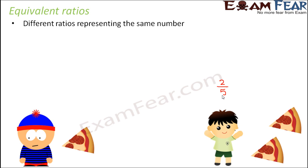So one slice of pizza out of five slices. So let's call him A and let's call him B. So in this case, if I ask you what is the ratio of the pizza eaten by A to the pizza eaten by B?